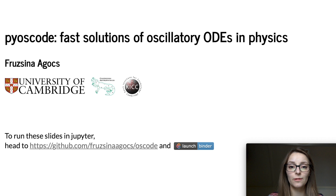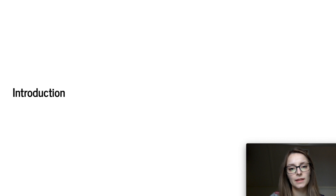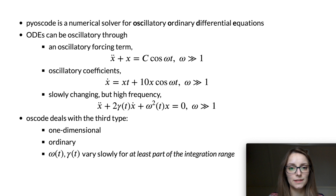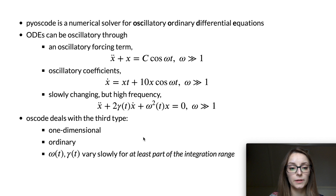First, let me summarize what kind of problems Pyoscode can solve, and then I'll briefly go through the algorithm underlying the package. Ordinary differential equations can have oscillatory solutions for many reasons. This can be due to an oscillatory forcing term or an oscillatory coefficient multiplying one of the terms in the equation, but even in the absence of a forcing term, if the frequency is large enough, the solution will oscillate rapidly.